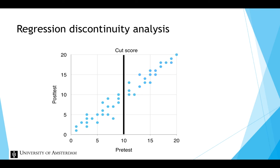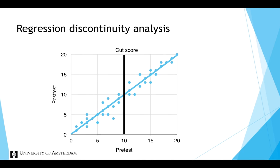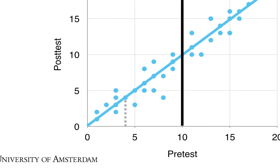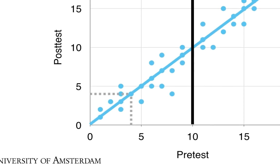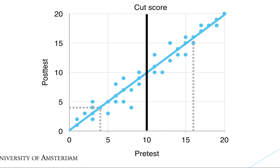Normally, without any treatment, we would expect that the pretest score increases with the posttest score — so the higher your pretest score on ADHD-related symptoms, the higher your posttest score on ADHD-related symptoms. The solid line through the dots is the linear regression line, which summarizes the relationship between the pretest and posttest scores. This line depicts a strong positive relationship: a low pretest score goes together with a low posttest score, and a high pretest score goes together with a high posttest score.